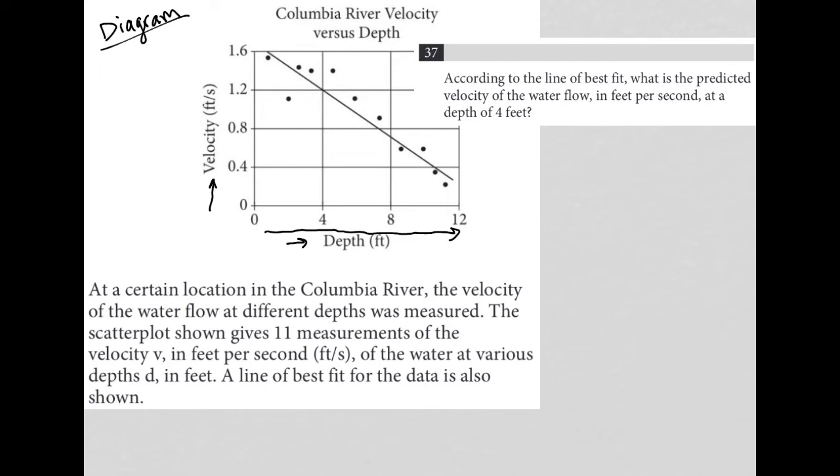According to the line of best fit, what is the predicted velocity of the water flow in feet per second at a depth of 4 feet? So very simple question.